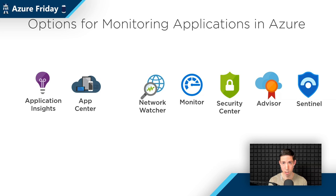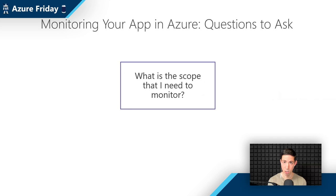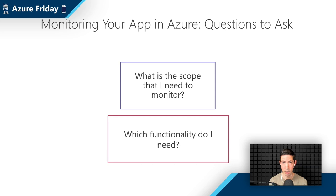So how would you go about choosing between these services? What I do is I first ask the question: what is the scope that I need to monitor? Is that a single application, or is that more — maybe all of my subscription or resource group? And then after I determine that, I can look at the functionality I actually need for monitoring, because that can be different. For instance, I could need a security system, so I'd look at Security Center, or I might need to monitor usage.